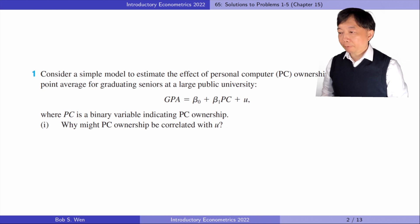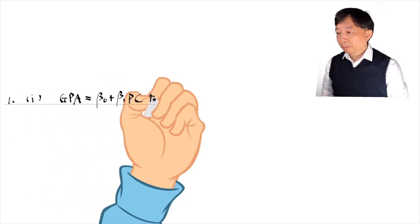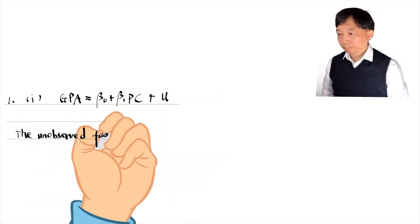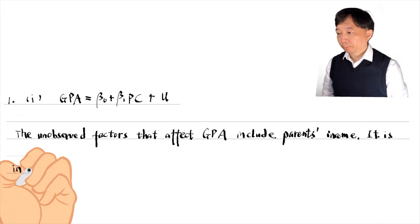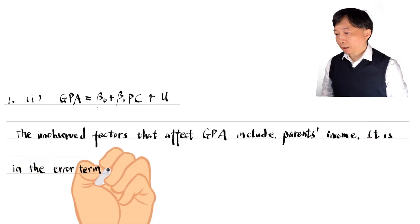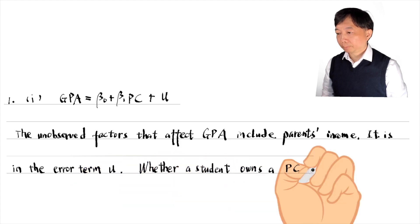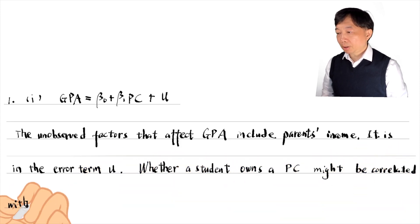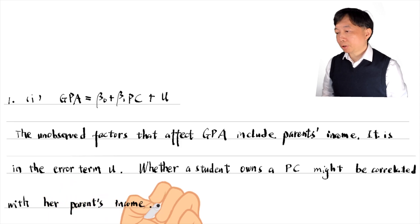The unobserved factors that affect GPA include parents' income, which is in the error term. Whether a student owns a PC might be correlated with her parents' income. In other words, PC ownership might be correlated with the error term.